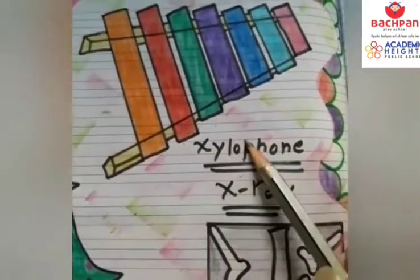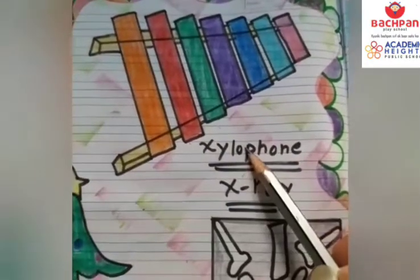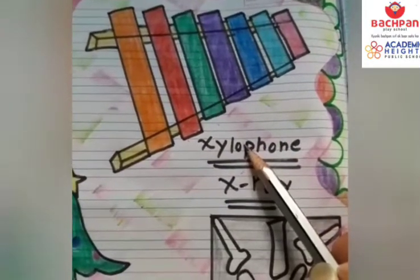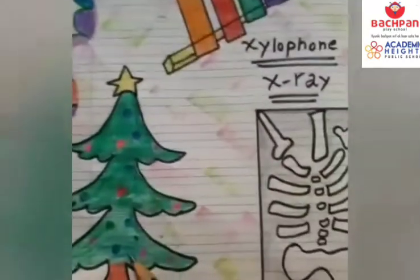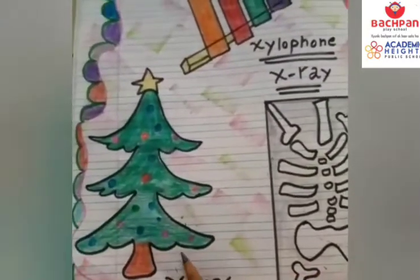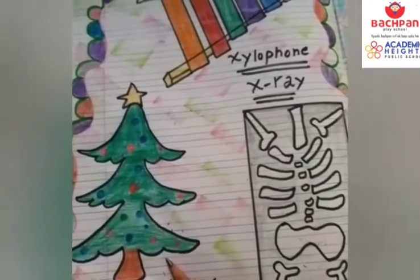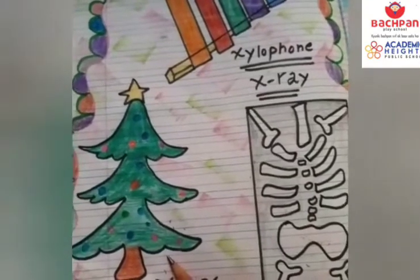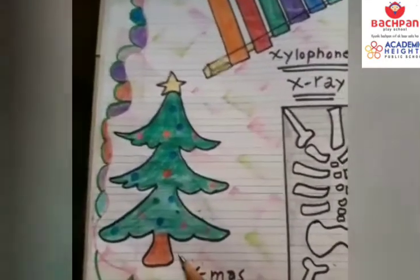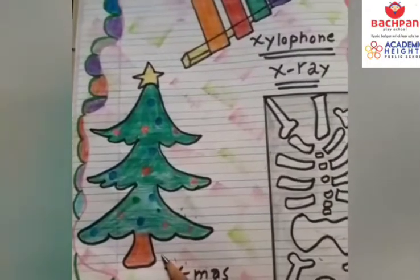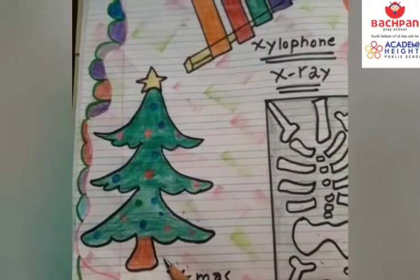X is for xylophone. Mohan plays xylophone very well. X is for X-mas. X-mas is decorated with ornaments and gifts. This festival is celebrated by almost billions of people all over the world.